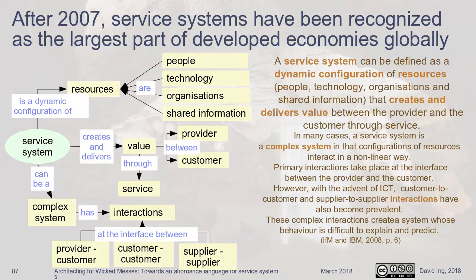A definition from the Institute of Manufacturing: a service system is a dynamic configuration of resources — people, technology, organizations, and shared information. The service system creates and delivers value through service, between a provider and a customer. It can be a complex system of interactions between customer and supplier.